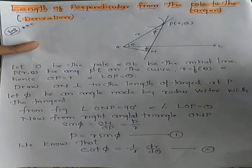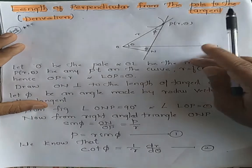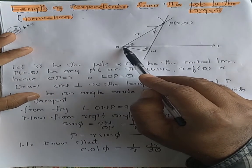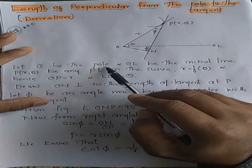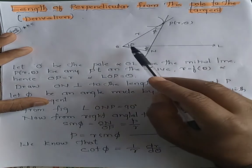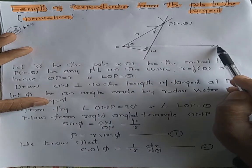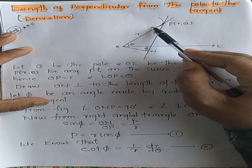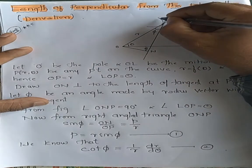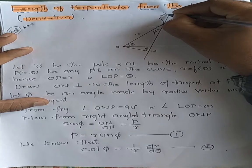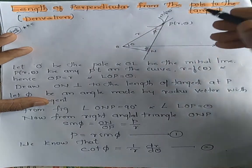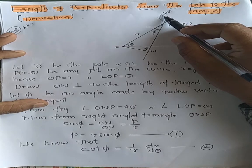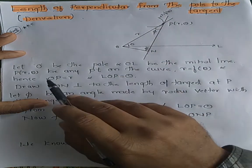Let me tell you how to start this derivation. First, let O be the pole and OL be the initial line. Then take a curve defined as r = f(θ). As we have taken in the previous derivation, the polar curve should be taken, so let r = f(θ) be the curve.